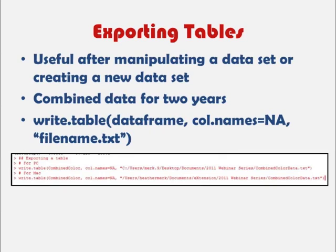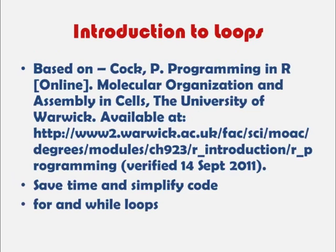To do our variance component analysis, we combined two datasets, and it may be useful to export that combined dataset. We can do this easily using R with the write.table command, followed by the name of our data frame — in this case, combine_color — and col.names = NA, which is very important; otherwise your data will not be read into Excel with headers appearing correctly. Then type the name of the file with a .txt extension. You may then open this file in Excel.